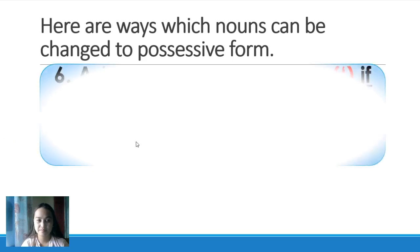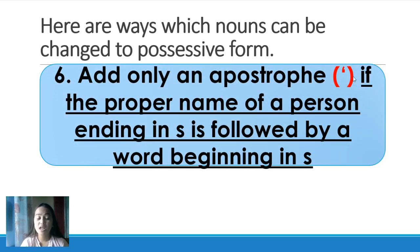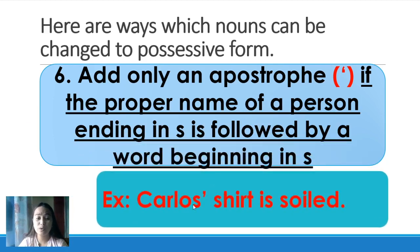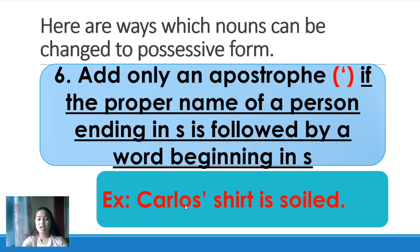Number six: add only an apostrophe if the proper name of a person ending in S is followed by a word beginning with S. If the name ends in S and the next word also starts with S, add only an apostrophe. Example — Carlos ends with S. The following word is 'shirt,' which begins with S. So we add only an apostrophe: 'Carlos' shirt is soiled.'